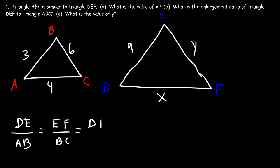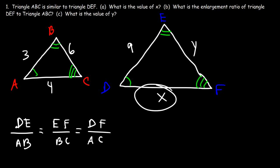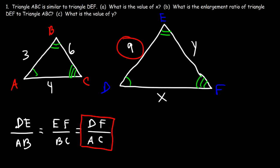Notice that A corresponds to D. Similar triangles have congruent angles, so angle A and angle D are congruent, angle B is congruent to angle E, and angle C is congruent to angle F. Since x is DF, we need to use the ratio DE over AB equal to DF over AC.